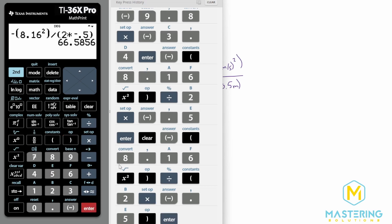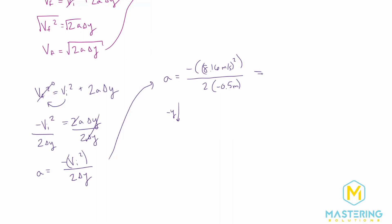So we have −(8.16²) divided by (2 × −0.5). The final acceleration while he's on the pad is 66.6, which we round up to 67 meters per second squared.